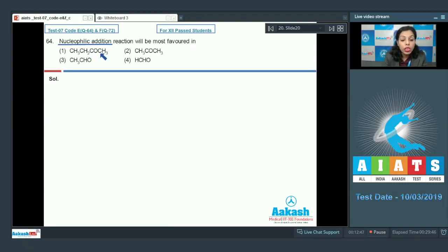First one is CH3CH2COCH3 means at both the sides there are bulkier groups. That's why the rate of reaction would be slow as compared to the second option, CH3COCH3. This is acetone. In this case, less bulkier groups are there. But if I talk about ethanol, in this case comparatively less bulkier group.